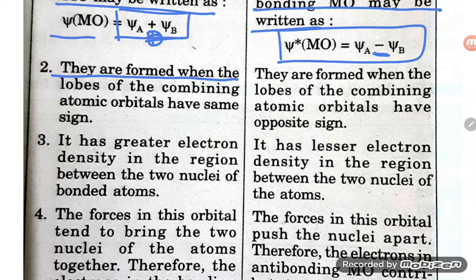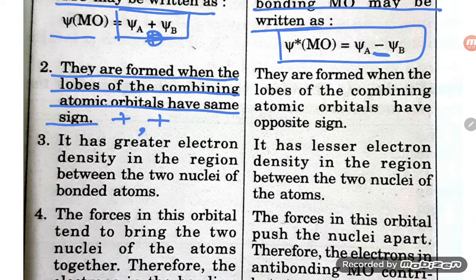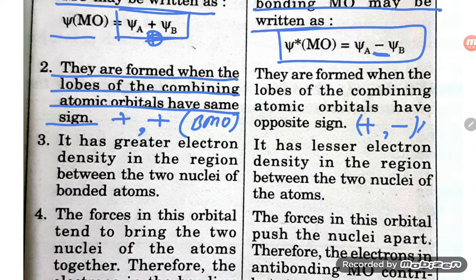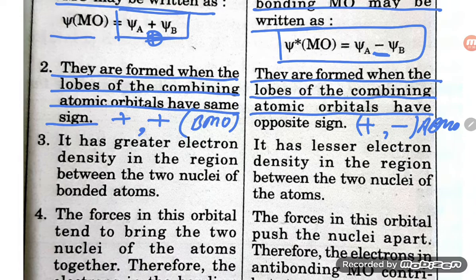Bonding molecular orbitals are formed when the lobes of the combining atomic orbitals have the same sign. So if same-sign lobes are present, they form a bonding molecular orbital. If different signs (plus and minus) are present, they form an antibonding molecular orbital. Antibonding molecular orbitals are formed when the lobes of the combining atomic orbitals have opposite signs.